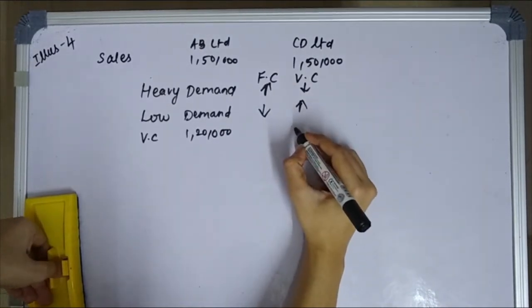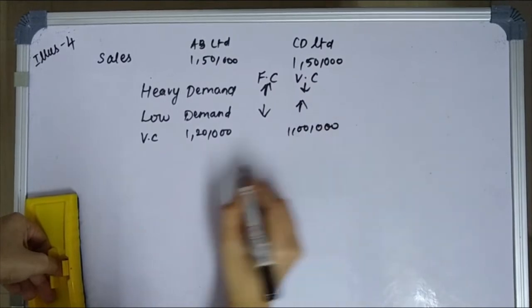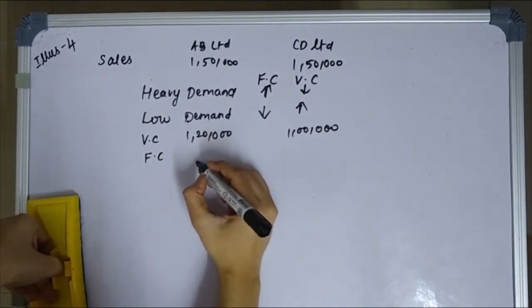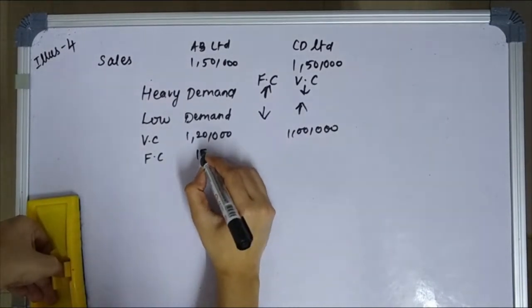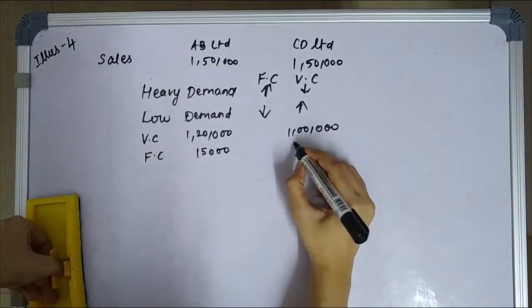For CD limited $1,00,000. Next, fixed cost: AB $15,000, CD $35,000.